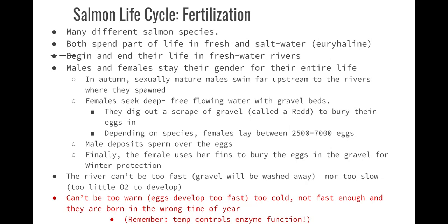At the beginning and end of their life stages, salmon are going to be in freshwater — they die in freshwater and are born in freshwater. Males and females will stay their gender their entire life, so they have a fixed gender. In autumn, sexually mature males will swim upstream to the rivers. They need to be large because going against the current requires a lot of ATP. The males go back to where they spawned — where they were born and where their parents' sperm and egg met.